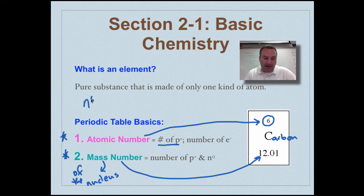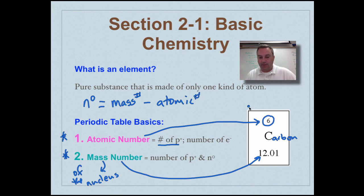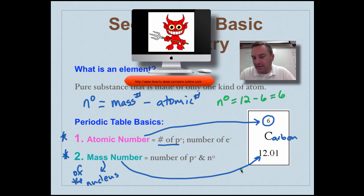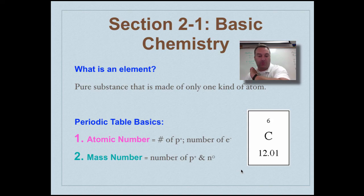If I want to find out what the number of neutrons are, all I have to do is take the mass number and subtract the atomic number. In this case, the number of neutrons in a carbon atom are going to be equal to 12 minus 6, mass number minus atomic number, and that's going to give us the number six. So carbon is kind of devilish. It has six electrons, six neutrons, and six protons. Six, six, six - the mark of the beast.